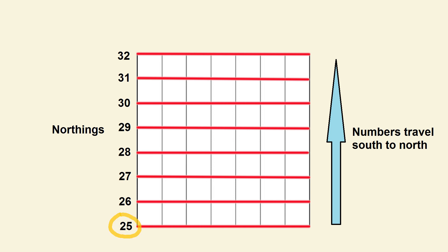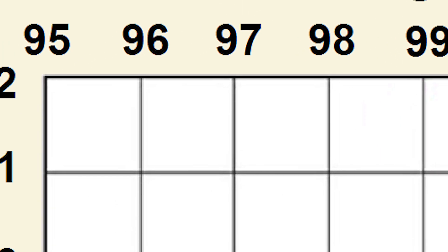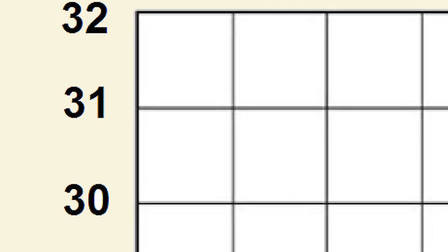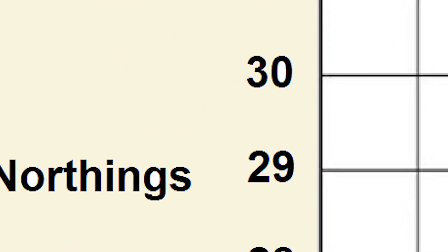The numbering goes 25, 26, 27, and so on. When reading an area reference you always read the easting first and the northing second.